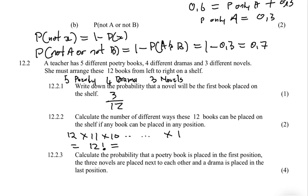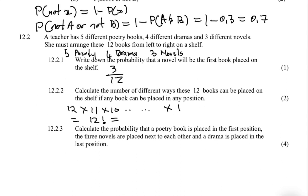So the answer for 12.2.2 is 12 factorial, which equals some large number you can calculate on your calculator. For question 12.2.3, we need to find the probability that a poetry book is placed first, the three novels are placed next to each other, and a drama book is placed last. The denominator is 12 factorial, since there are 12 positions going down to one.